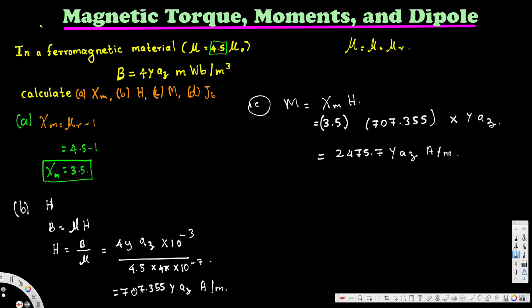For part D, Jb is magnetization volume current density. It is calculated using the formula Jb equals del cross M (the curl of M).